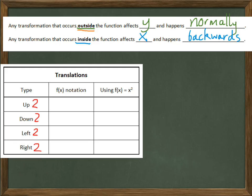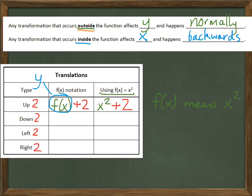As we do these translations, we're going to use a distance of 2 — up 2, down 2, left 2, right 2 — as examples. If we're going up 2, that's affecting y, and it's going to happen normally. Since up 2 is positive in the y direction, we'll add 2. In terms of the function, if f of x is x squared, that would be x squared plus 2. For down 2, that would be y minus 2, so we'd write f of x minus 2, or in our function example, x squared minus 2. The function x squared minus 2 has been moved down 2 from the original x squared.